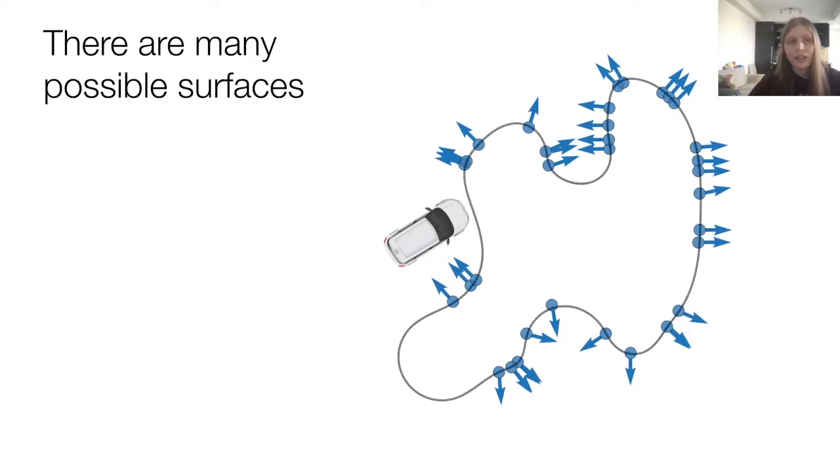Just by looking at the point cloud, it's intuitive that there are many shapes that the surface could take. Sure, it could be exactly like the Poisson reconstruction one, but it could also look like this, like this, like this, or even like this.